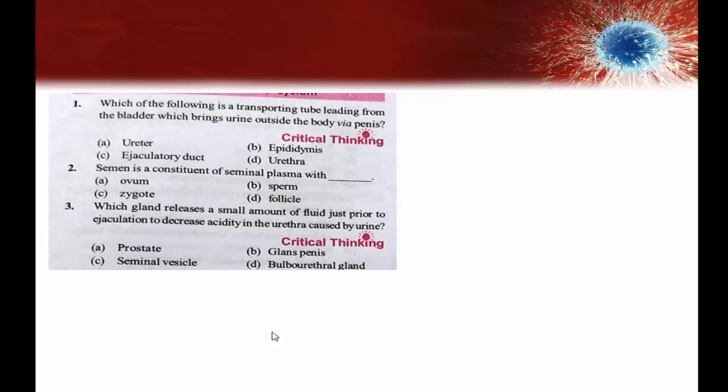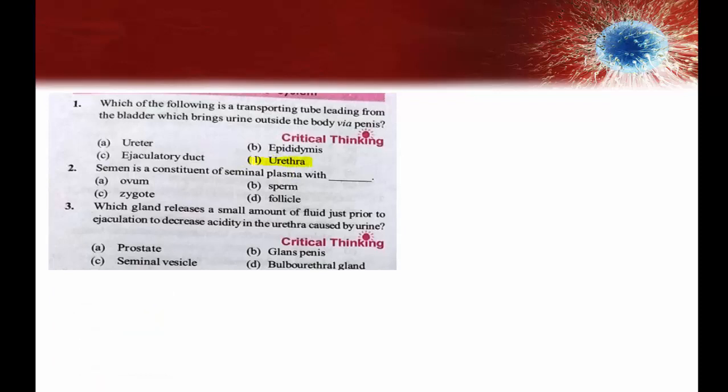In the male reproductive system, the genital system and urinary system are both associated, and their common opening is the urethra, through the penis. The urethra is part of the urinary system but opens outside through the penis. Through the penis, both urine and semen are released. The right answer is option D: urethra.